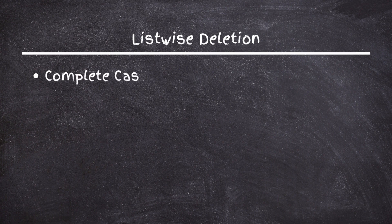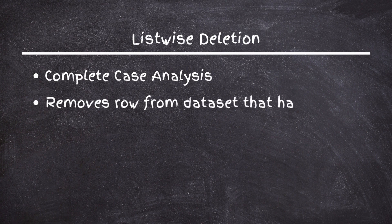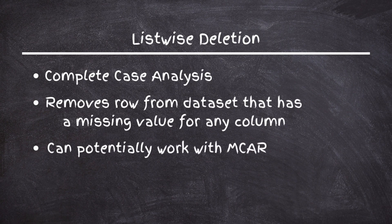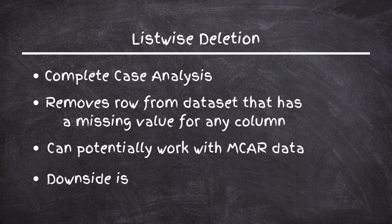So what are some ways to fix missing data? The first approach is deletion. Listwise deletion, also known as complete case analysis, removes a row if it has a missing value in any column. This can work for MCAR data, but the downside is that if missing values are spread across many columns, you can greatly reduce your dataset size, which could degrade machine learning model performance. Alternatively, if a column is missing many values and isn't important to your analysis, you can delete that column entirely.